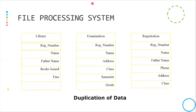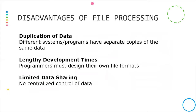There are several disadvantages of the file processing system: limited data sharing, duplication of data where different systems and programs have separate copies of the same data, lengthy development time where programmers must design their own file formats, and no centralized control of data. For example, in our university, if we change our phone number in the examination department, we must change it in every other place too. This is our biggest disadvantage — our time is also wasted.